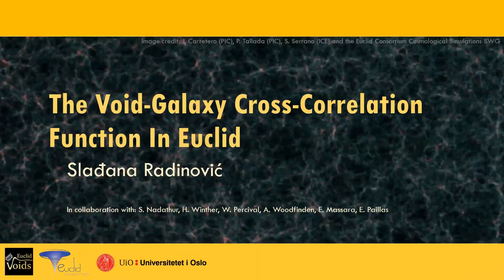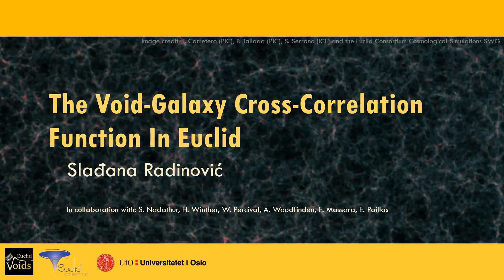Hello, my name is Slajana Radinovich. I am a PhD student at the University of Oslo, where I work on cosmic voids, or as my mom likes to say, I study nothing, which is kind of true. I've been attending Cosmology from Home for a couple of years now without actually contributing with a talk, so it's really nice to actually contribute and I look forward to all of the discussions later. So as the title suggests, I will be talking about the void-galaxy cross-correlation function, what can it tell us about the universe, and in particular, what cosmological constraints we can expect from voids in Euclid.